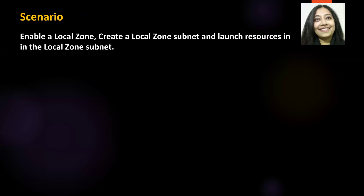So the scenario for our lab today: we need to enable an AWS local zone, then we need to create a local zone subnet, and then finally we will launch resources in that particular local zone subnet.